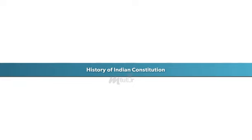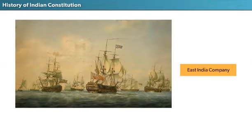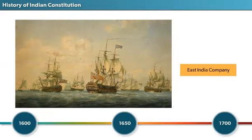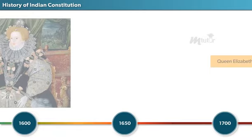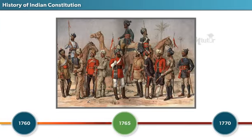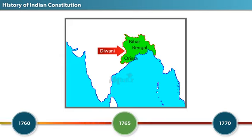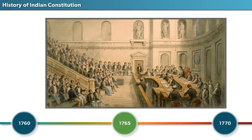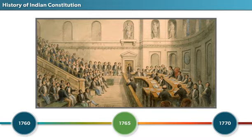Let's start with history. Our Constitution's history started in 1600 when the British came to India as traders in the form of the East India Company. They had the exclusive right of trading in India under a charter granted by Queen Elizabeth I. In 1765, the East India Company obtained the Diwani — the Rights Over Revenue and Civil Justice of Bengal, Bihar, and Orissa — which started its career as a territorial power.